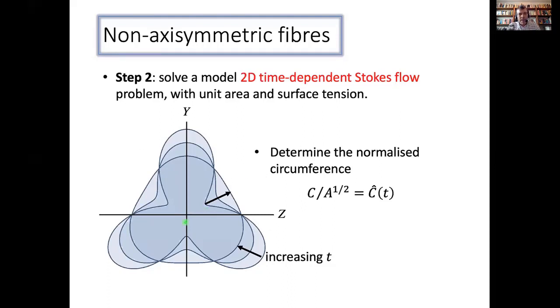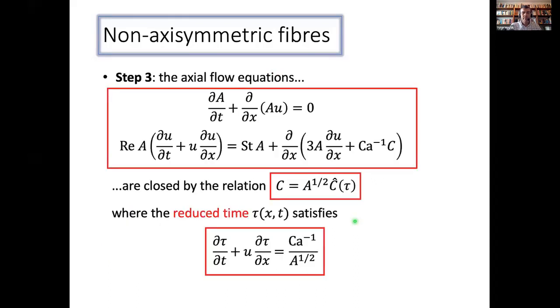So having done that, then we can then calculate what the circumference of this normalized problem is. I'm going to call that C hat of T. So we'll calculate how that evolves with time. And that is related to the actual circumference because of the normalization, it's the actual circumference divided by the square root of the cross sectional area. Now I can close the problem. So I go back to my governing equations. I plug in that the circumference is the square root of the area times this function C hat that I just worked out. But I have to evaluate this C hat at the reduced time, which itself satisfies this sort of hyperbolic PDE.